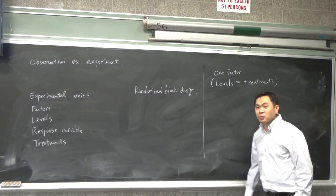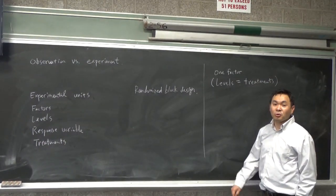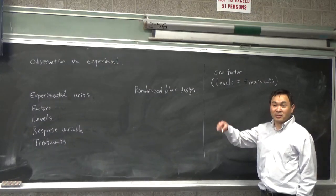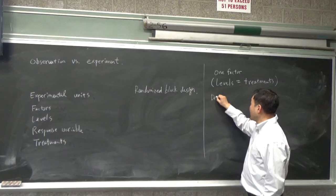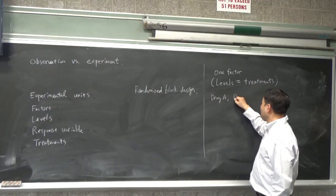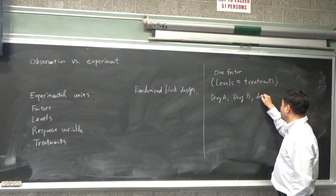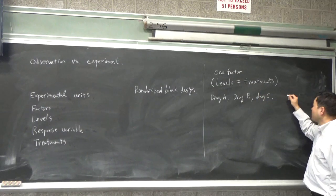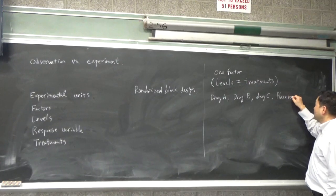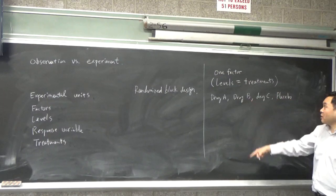And then an ideal way to design your experiment would be have the groups divided equally to all the factors, right? So if you had, like, drug A, drug B, drug C, and then if you had a placebo, let's say you're trying to do this kind of experiment.